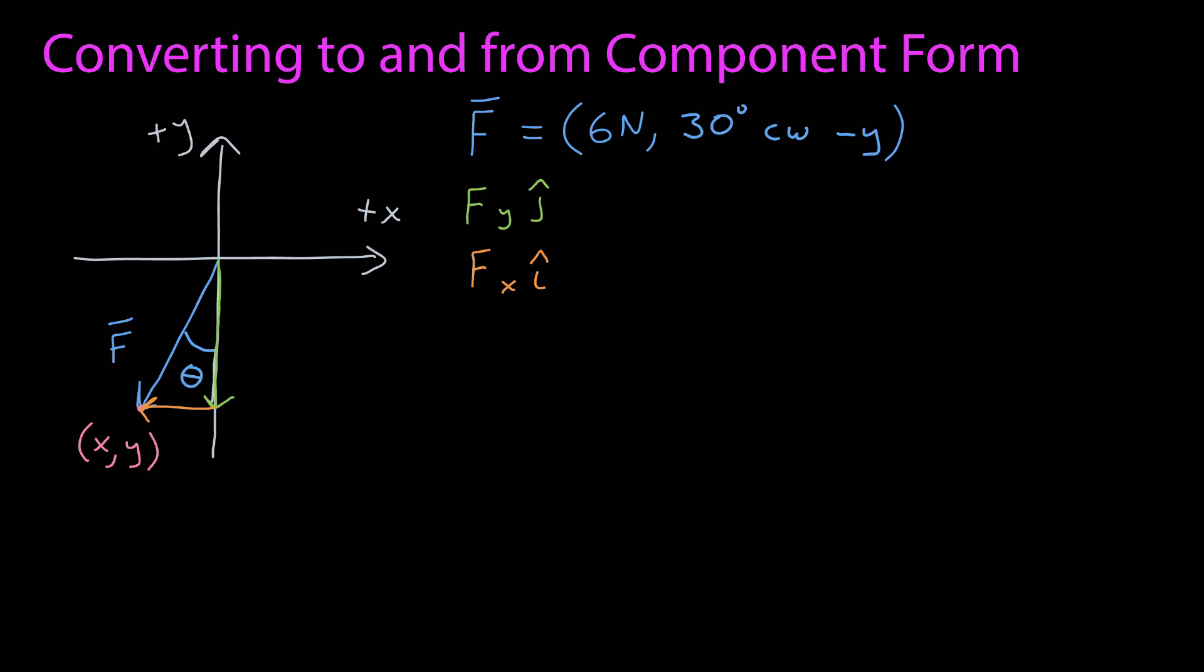So this first vector, this green one, has a magnitude of some value, and it's multiplied by j-hat, which is the Cartesian basis vector pointing in the positive y direction. I add to that a second vector, this orange one,